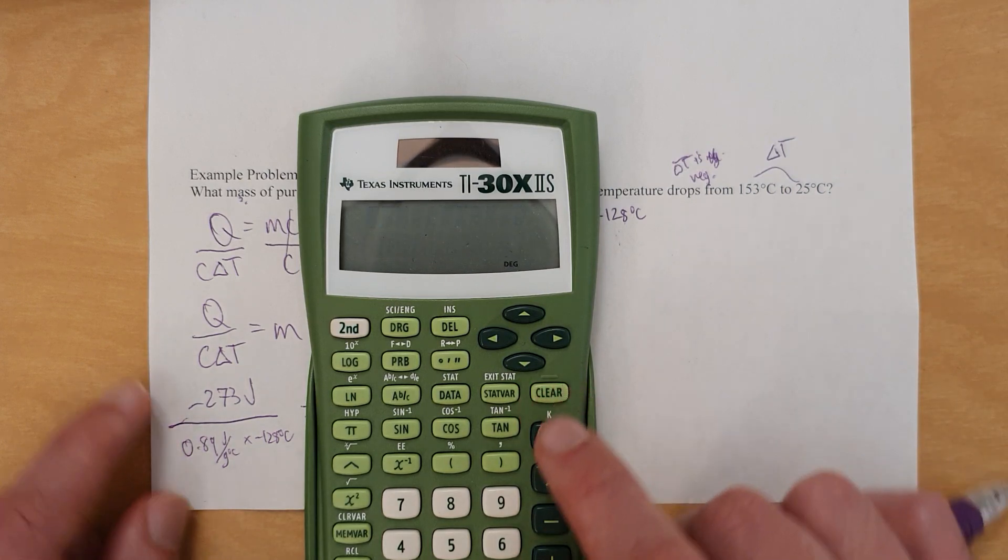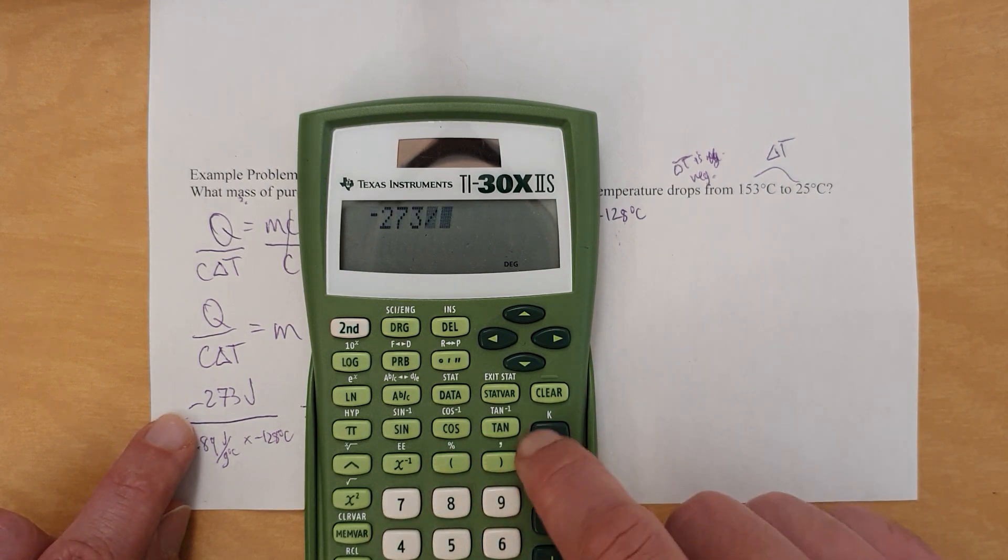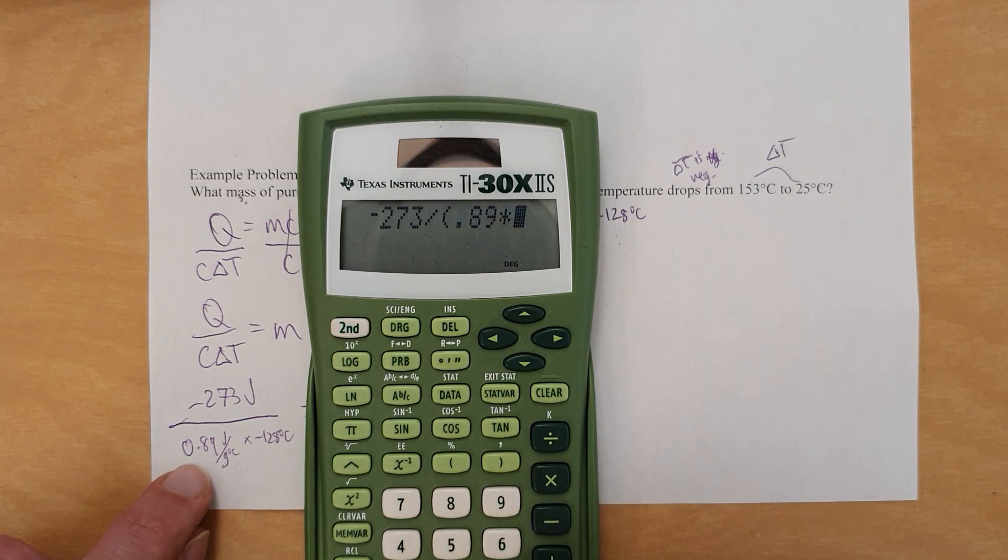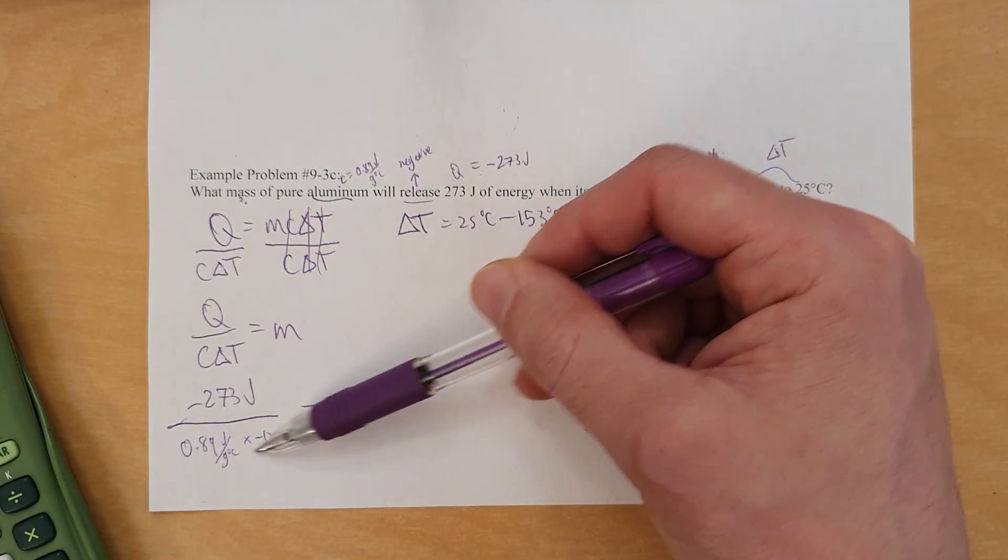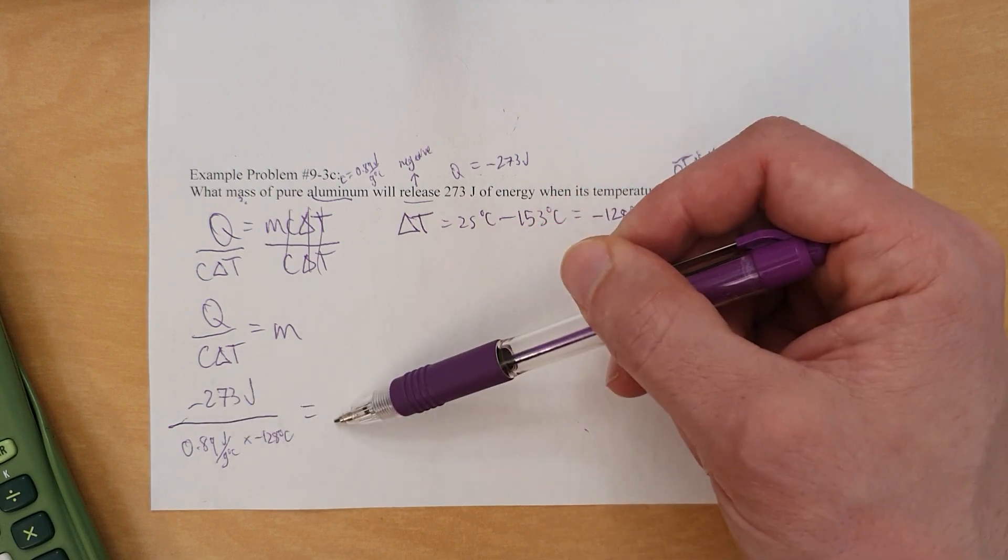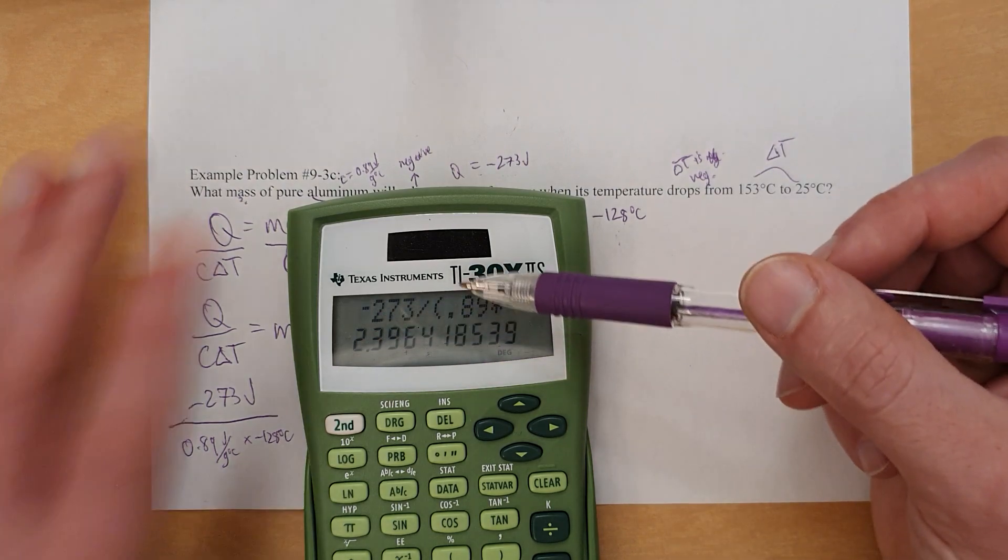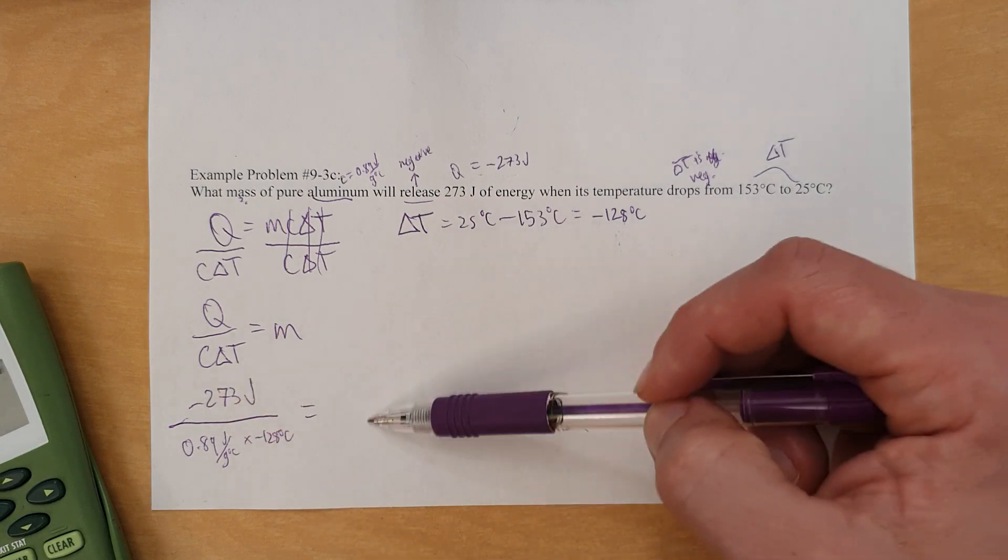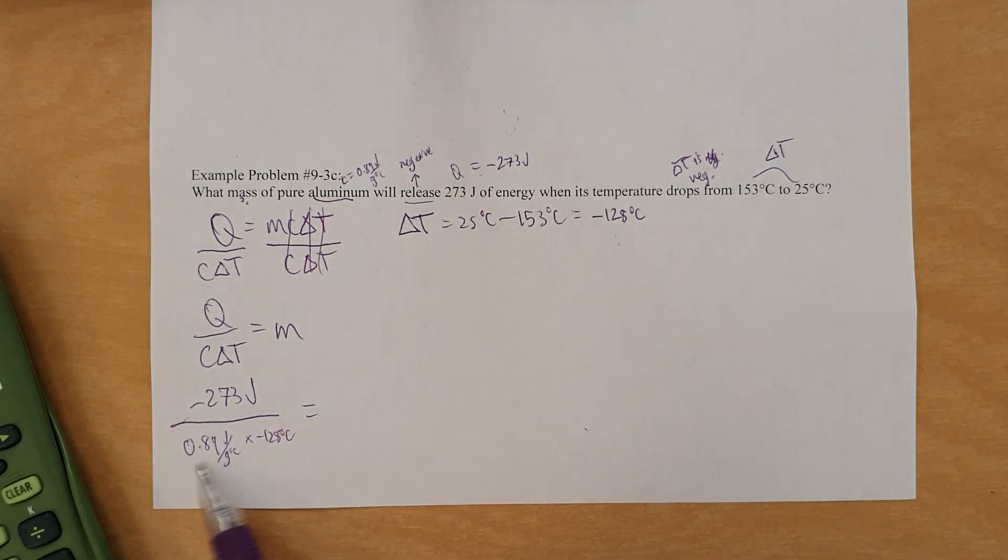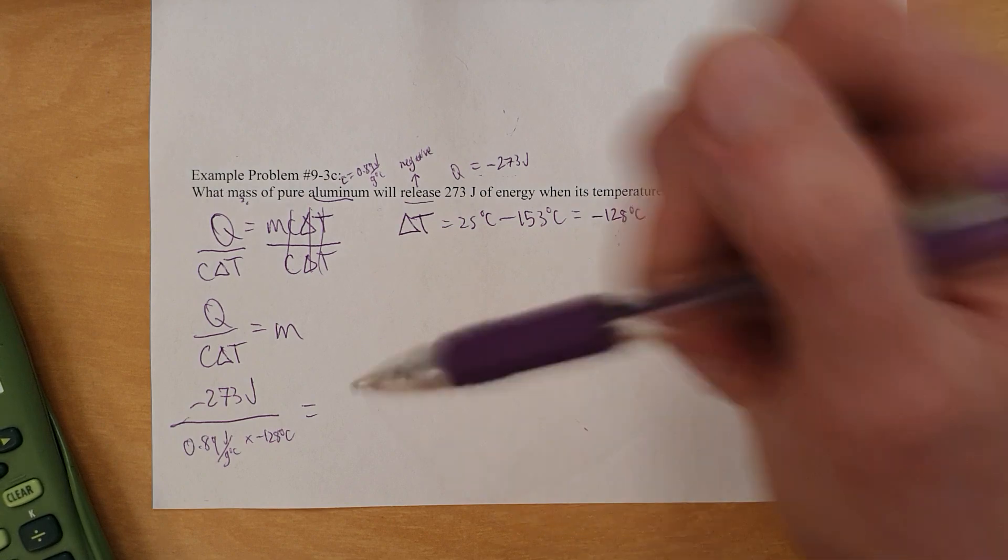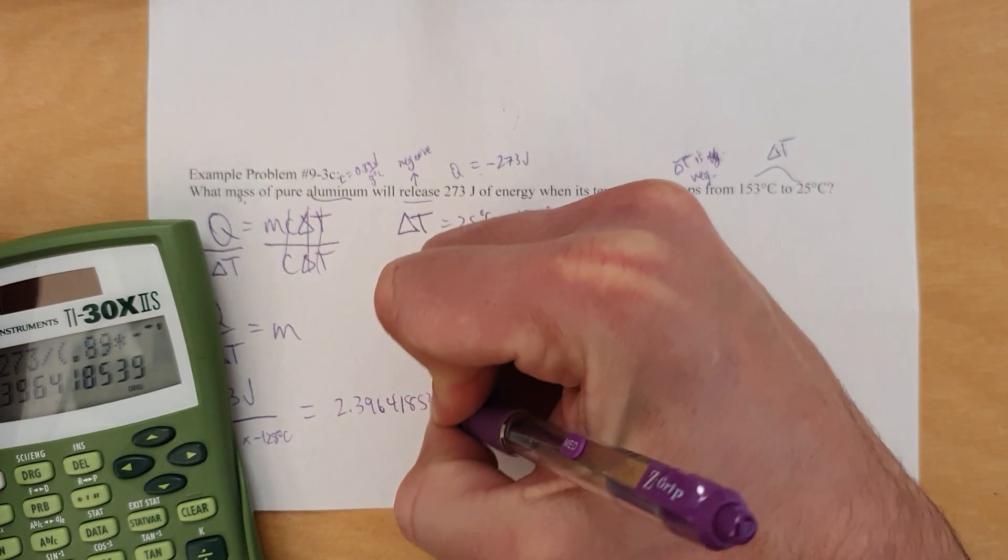One shouldn't necessarily always do that. But here's the way I did. I took a mental shortcut that I didn't properly explain. Negative 273 divided by 0.89 times negative 128 gives the exact same answer you saw before because you have a negative answer here. And this will make a negative answer in the bottom. So negative divided by negative makes a positive. So it comes out to this. And I took that mental shortcut. I just hadn't bothered to show it. But if you plug in the negatives, you get the same thing. That said, if only one was negative, then you'd have a negative answer. But if both are negative, then you'd have a positive answer. You'll never have all three negative because it's impossible to have a negative specific heat capacity.